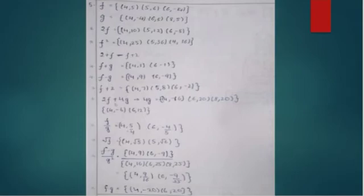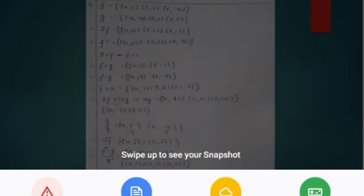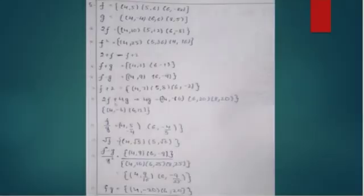For this question, first write the given information. To find 2f, multiply each output value by 2. So 2f = {(4,10), (5,12), (6,-8)}. Write out each pair carefully — multiply the second element of each ordered pair by 2.